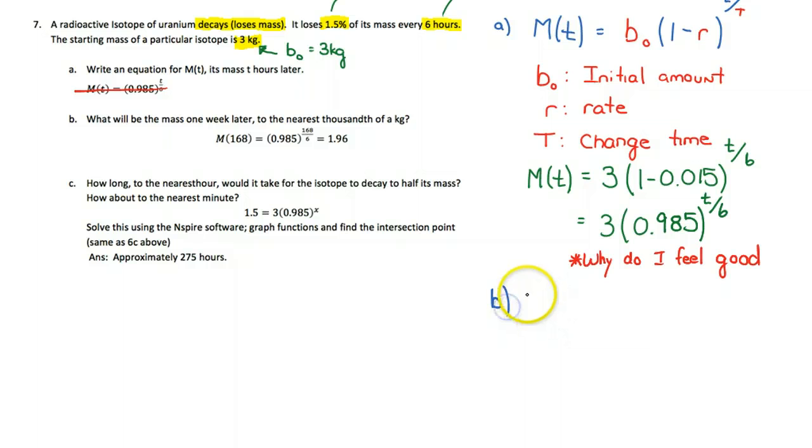Well we know our function M is a function of T, is equal to 3 times 0.985 to the power of T over 6. So I want to know, what will the mass be one week later? What you have to watch in this case is that the time is equal to one week, but my change time is actually given to me in hours.